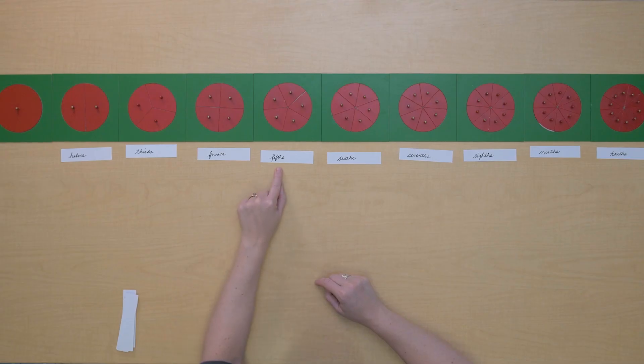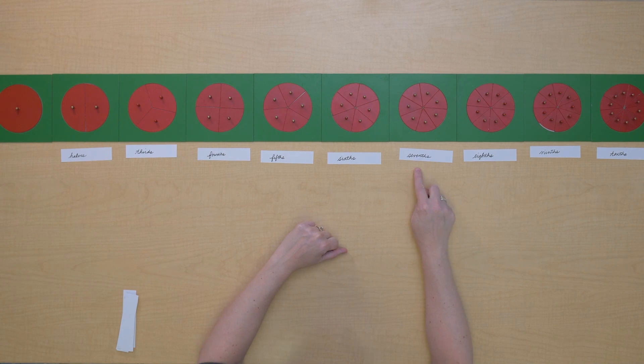Have you noticed something? Have you noticed how the name of these different fractions helps you to know how many pieces there are? In the fifths there's five pieces. In the sevenths there's seven pieces.